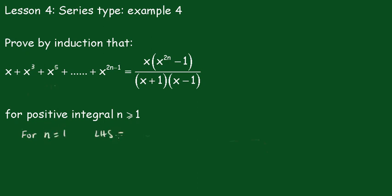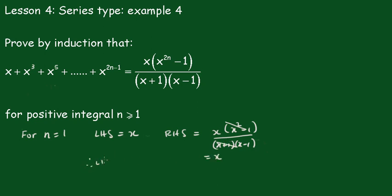For n equals 1, the left hand side is obviously just x. The right hand side will be equal to x times (x squared minus 1) over (x plus 1)(x minus 1). Now x squared minus 1 cancels with (x plus 1)(x minus 1) and we get x. Therefore the left hand side equals the right hand side, so the statement is true for n equals 1.